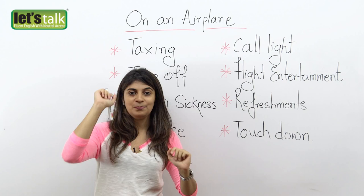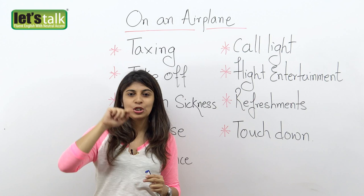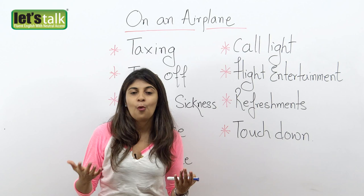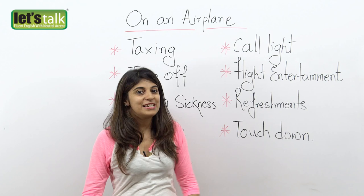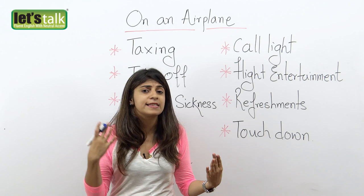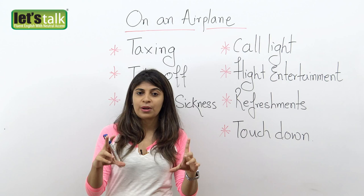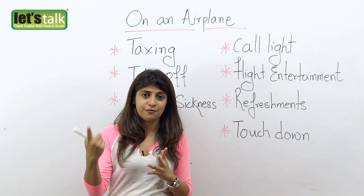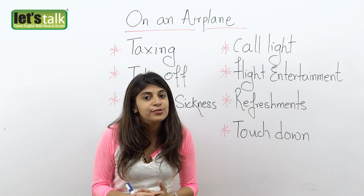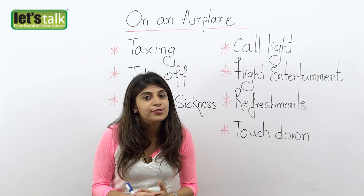We have call light. The call light is the small button above your seat that you use when you need some assistance. Once you press it, the cabin crew or flight attendant will come to help you. We also have flight entertainment. Many aircraft, especially on long-distance flights, offer flight entertainment through small LCD screens on the back of the seats in front of you. You can play music or movies, and you can ask for headsets from the flight attendants.